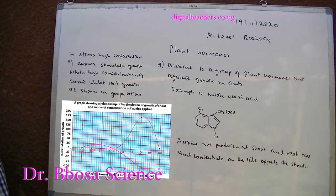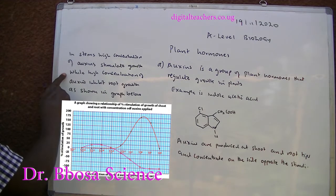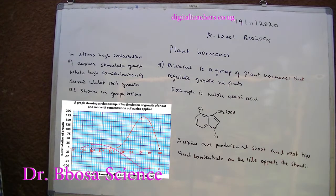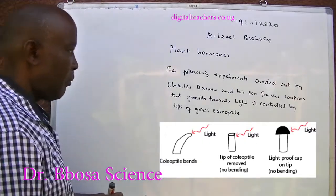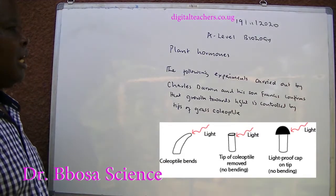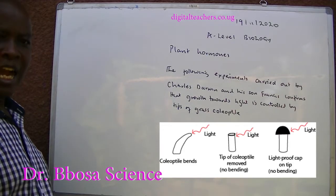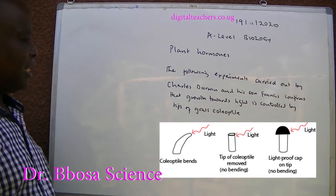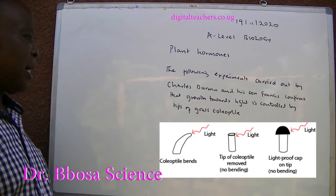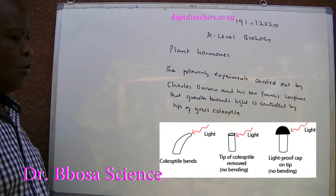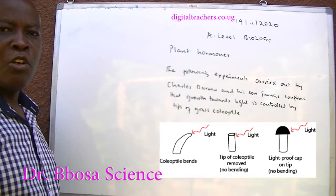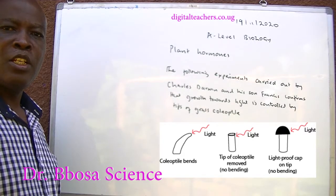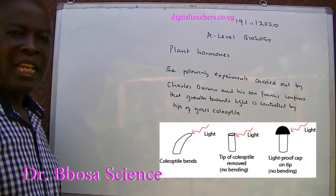In stem cells, high concentration of auxins stimulates growth, while high concentration of auxins inhibits growth in roots. Experiments carried out by Charles Darwin and his son Francis confirm that growth towards light is controlled by the tips of grass seedlings, as coleoptiles bend towards unidirectional light.